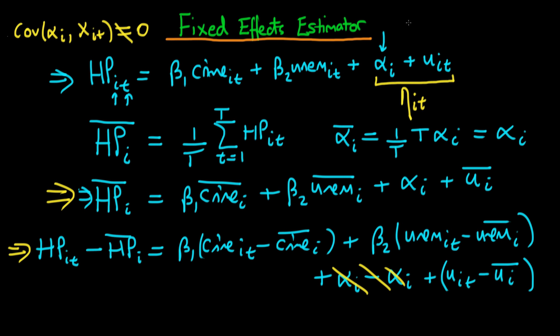So all we require for that is we require that the covariance between our independent variables x_it with our idiosyncratic error u_it is equal to zero.